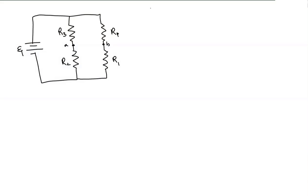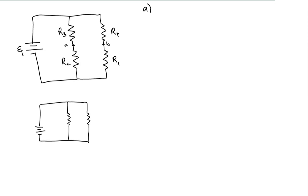I started working on this by looking at the potential difference from A to B, but I overlooked the requirement to find the current from the battery first — which we need anyway to find the potential difference. So this morning I'll start with finding the battery current when the switch is open. We have two sets of resistors in parallel, and we can establish an equivalent circuit between them.